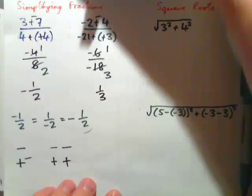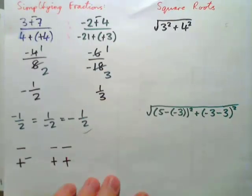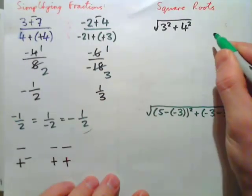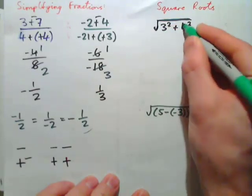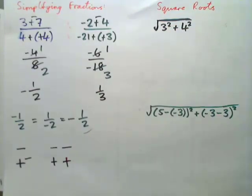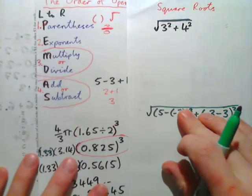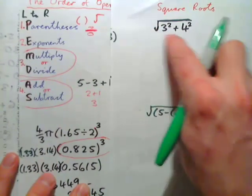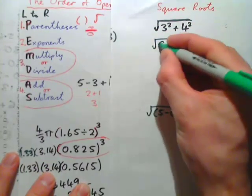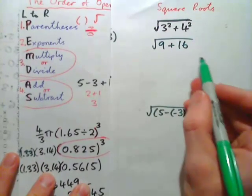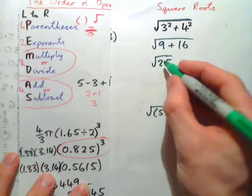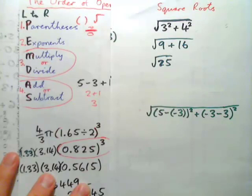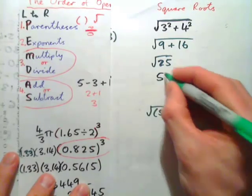Let's have a look at these square roots. Square root of (3 squared plus 4 squared). We consider the square root to be a grouping symbol — do everything inside it first. So by PEMDAS, we do grouping symbols first. Inside the square root: 3 squared is 9, 4 squared is 16. Going by PEMDAS, we do inside first and get root 25. What times itself gives 25? The answer is 5 — square root of 25 is 5.